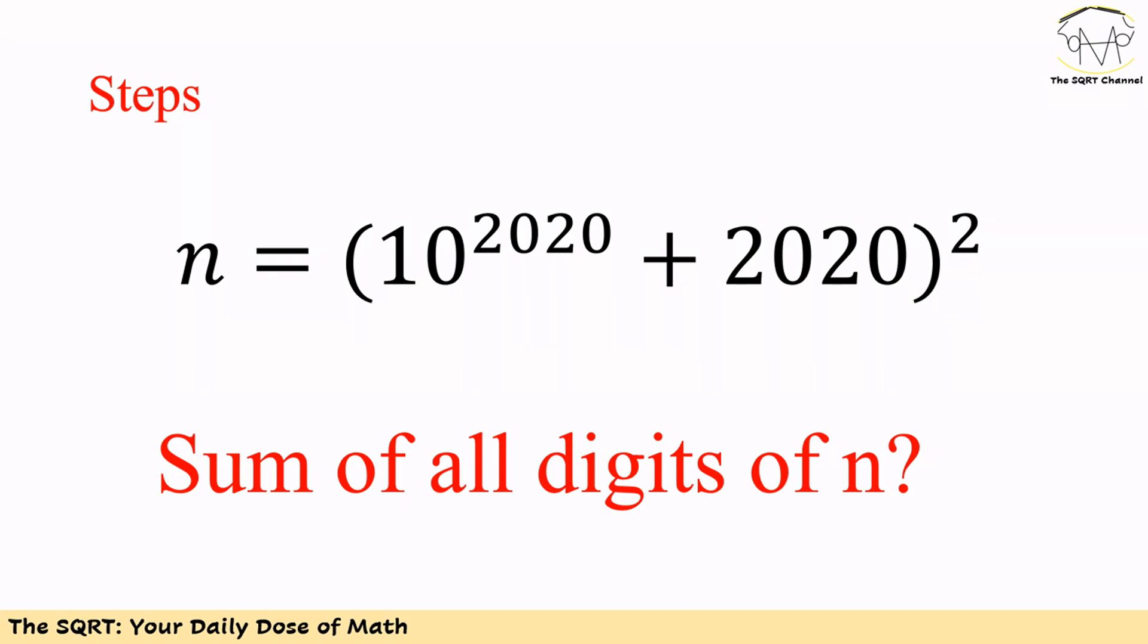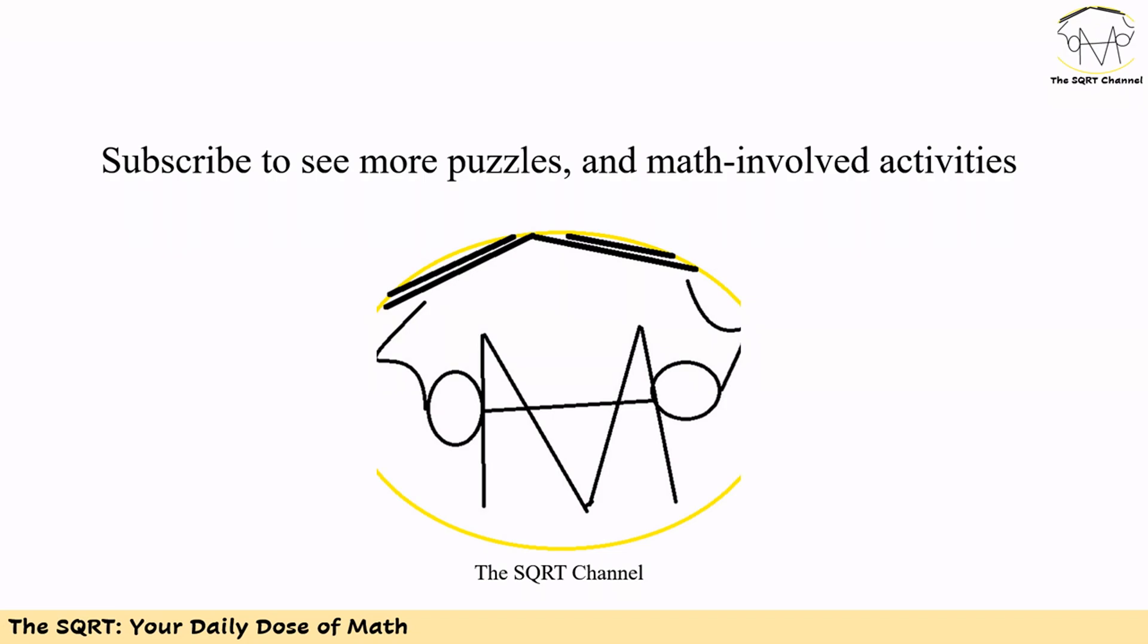Let's summarize what we've done. To find the sum of all digits in n, we first simplified n into three terms. For each term, we calculated the value using the property of 10^n. Then we added the digits together to find the final answer of 25.